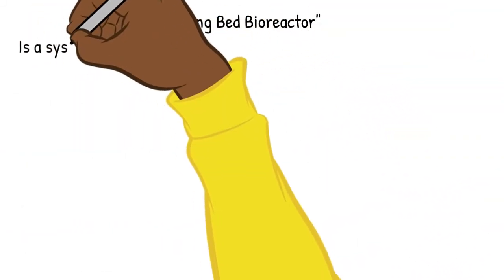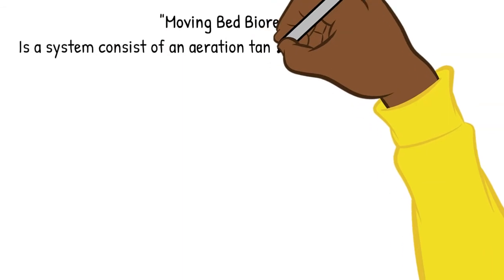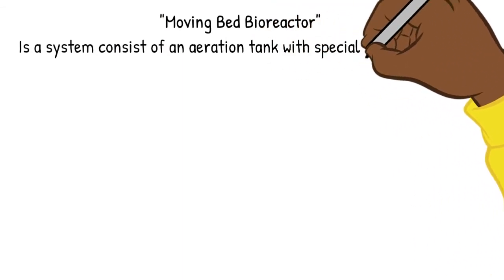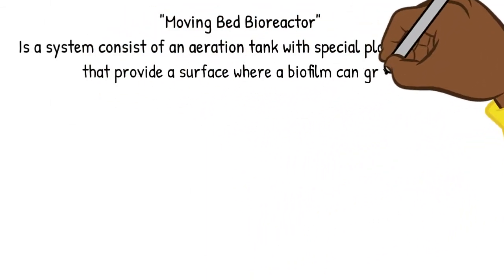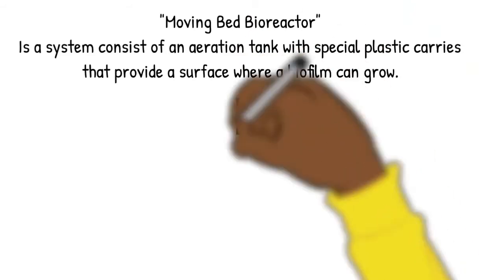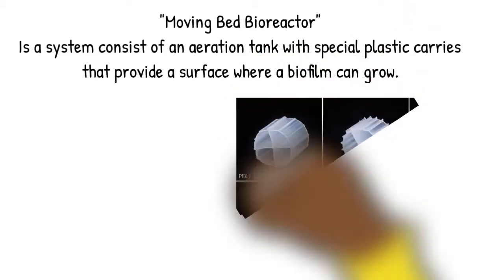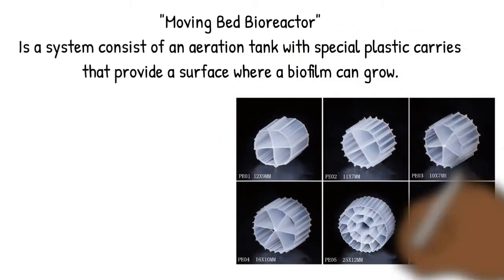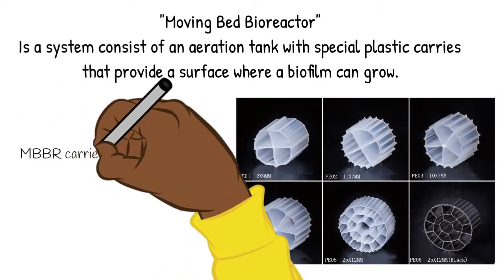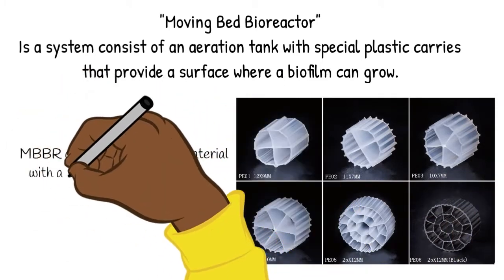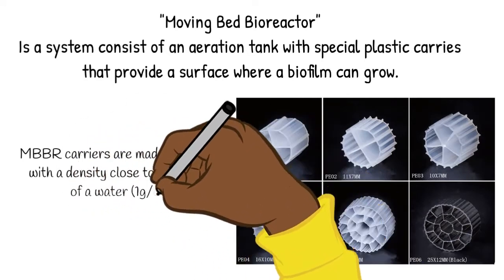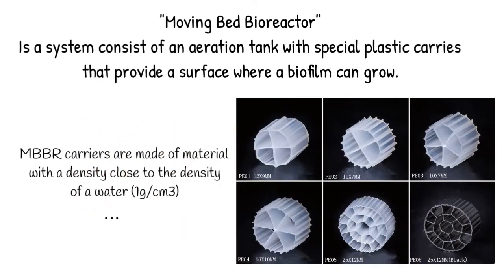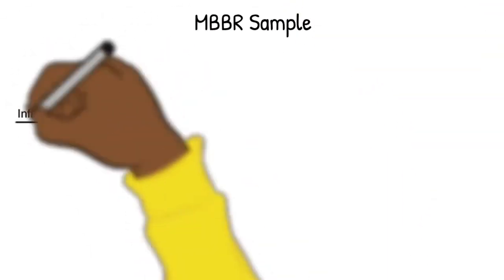A moving bed bioreactor (MBBR) system consists of an aeration tank with special plastic carriers that provide a surface where a biofilm can grow. Here is a sample of the plastic carriers. These are made of a material with a density close to the density of water — one gram per cubic centimeter.